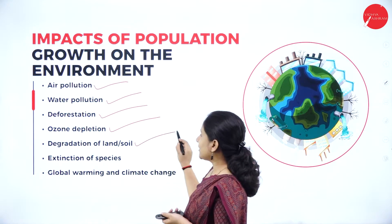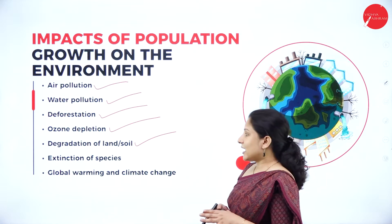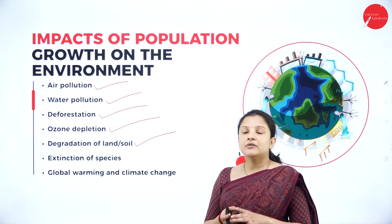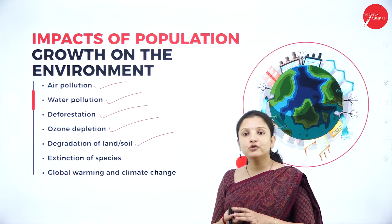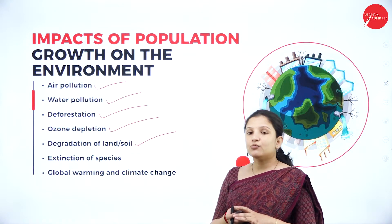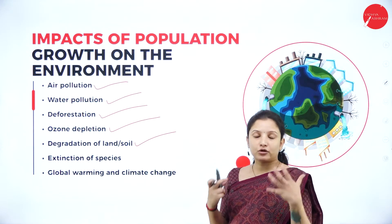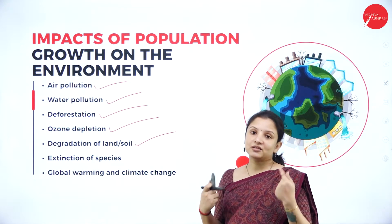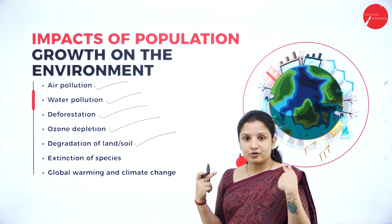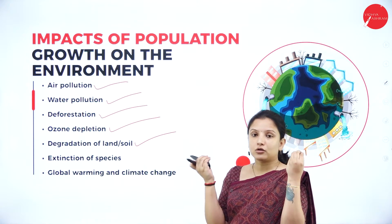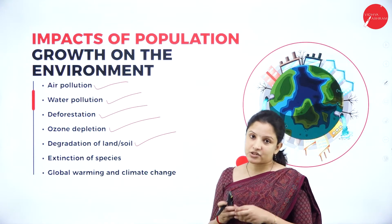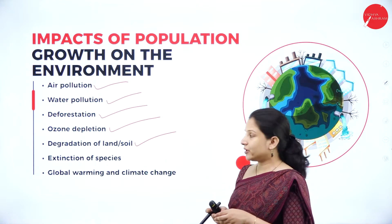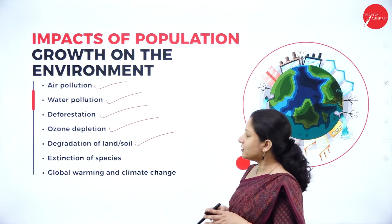Next is degradation of land or soil. When the population increases, the demand for food also increases. People will start using a lot of chemical fertilizers to increase food production through crops. Adding large amounts of chemical fertilizers to agricultural fields will degrade the soil. Therefore, degradation of land or soil can occur.